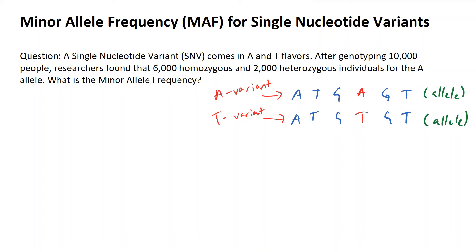In this video we're going to be walking through how to calculate the minor allele frequency for a single nucleotide variant. These are commonly abbreviated as MAF and SNV. We're going to walk through a question because I think that's a great way to learn this.